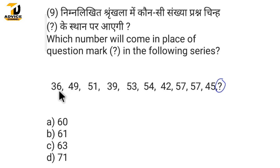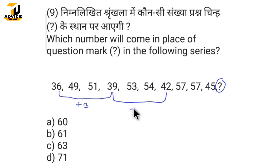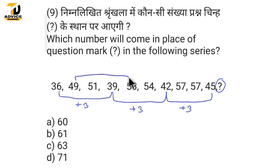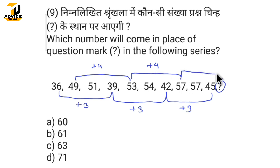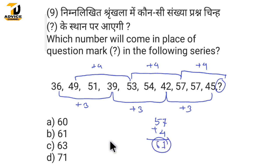Looking at all these questions, I will do the difference. 58 minus 53 is plus 4, giving 57. Then 57 minus 57: I will do the difference. The answer comes to 61 or 56. The right answer is Option B.